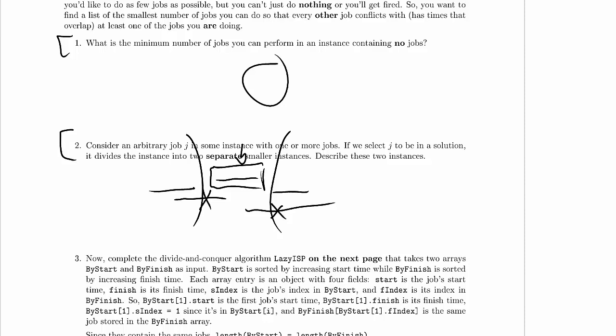And that means that an optimal solution to the left side, paired with an optimal solution to the right side, is an optimal solution to the two sides, assuming we use job J, right? So assuming we use job J,